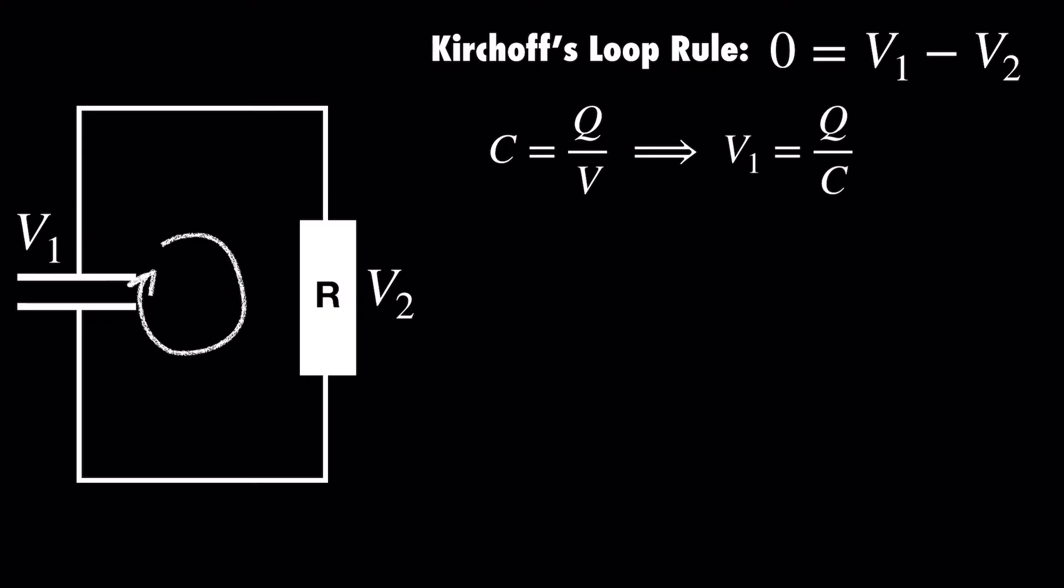If you recall what a capacitor is, it stores charged particles and then releases them over time before dissipating them in the resistor. Therefore Q is a function of time, and V is a function of time as well.